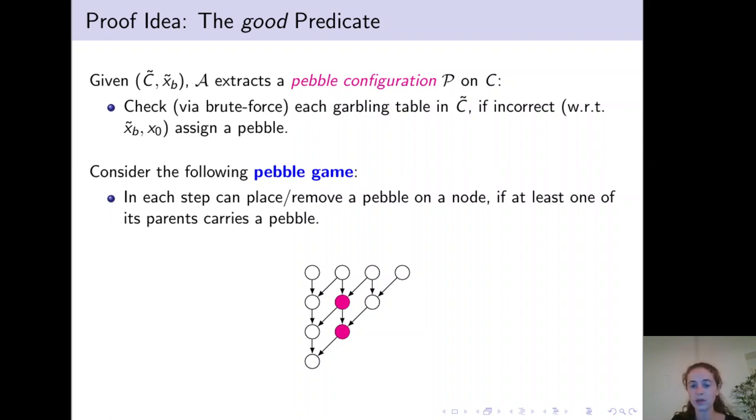We can then continue until we have placed a pebble on the sink of this graph and we can then remove all the remaining pebbles also following the same pebbling rules. But again we have to place a pebble on the source node to remove the second last pebble and can also remove the last pebble.